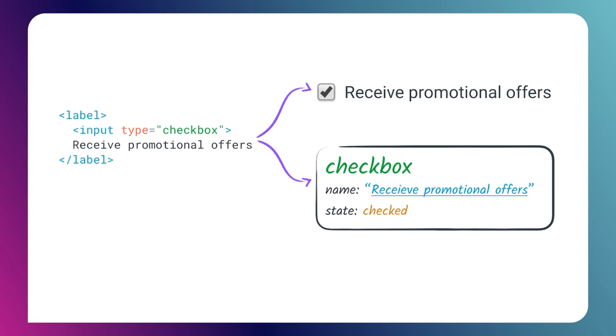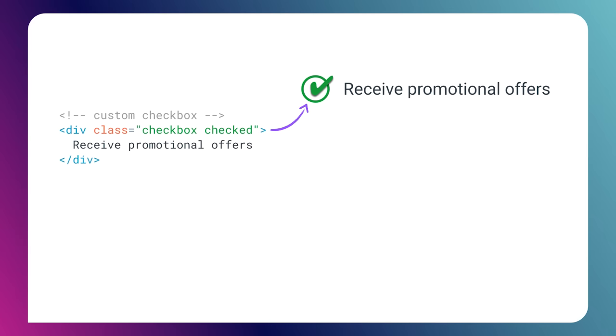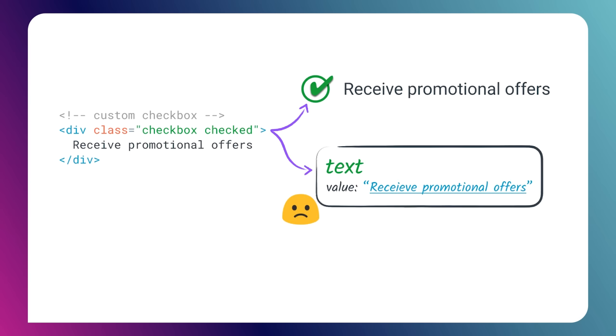If you create a plain checkbox, a screen reader will announce it as a checkbox, tell you its label — like "Received Promotional Offers" — and tell you the state, whether it's checked or not. But if you need to implement your own checkbox using a div, maybe to style it in a special way, the screen reader gives the user no indication that this element is meant to be a checkbox. It might announce the text inside the div, but it won't tell you the role or the state — and that's a really big problem.